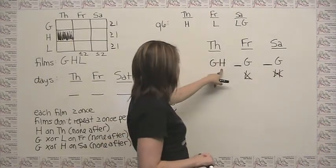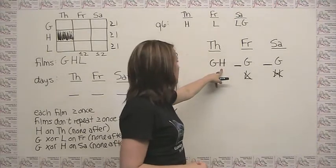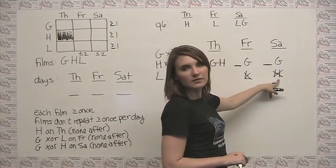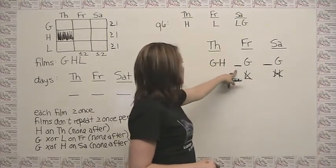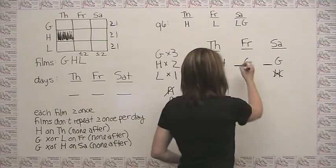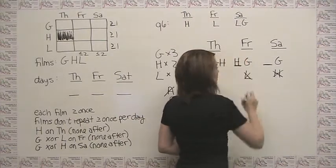We've accounted for one of those times here. We see that H can't go on Saturday. That means that the only place left for him to go is on Friday. So we actually have to place him here.